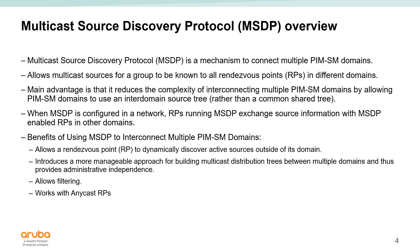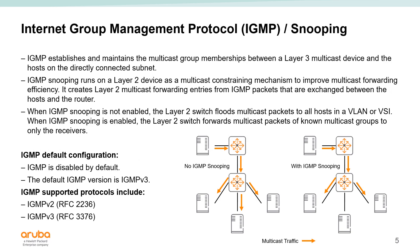Another great feature of MSDP is it works with Anycast RPs. We also have Internet Group Management Protocol and IGMP snooping. IGMP establishes and maintains multicast group memberships between the layer three multicast router and the hosts on directly connected subnets. IGMP snooping runs on layer two devices and constrains traffic to only the ports that actually require that multicast flow — without snooping all devices receive it, but with snooping only the ones that require it receive it. IGMP is disabled by default, but once enabled, V3 is the default version, with both V2 and V3 supported.